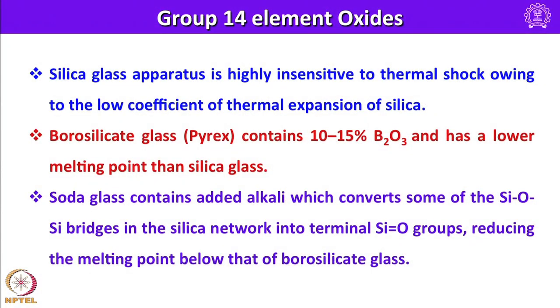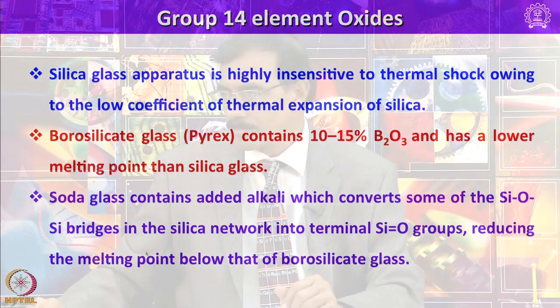We can also look into the uses of group 14 element oxides. Silica glass is highly insensitive to thermal shock owing to the low coefficient of thermal expansion of silica. Borosilicate glass, also known as Pyrex, contains about 10–15% B2O3 and has a lower melting point than silica glass. Soda glass contains added alkali which converts some Si–O–Si bridges into terminal Si–O groups, reducing the melting point below that of borosilicate glass.